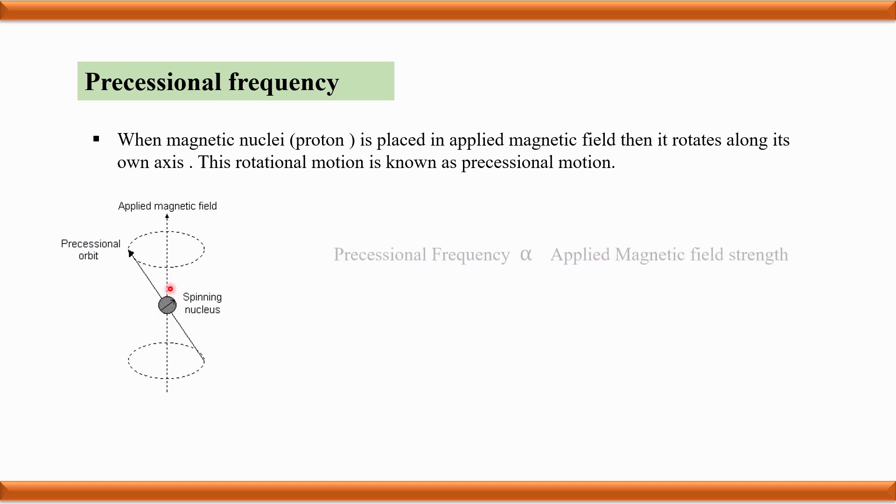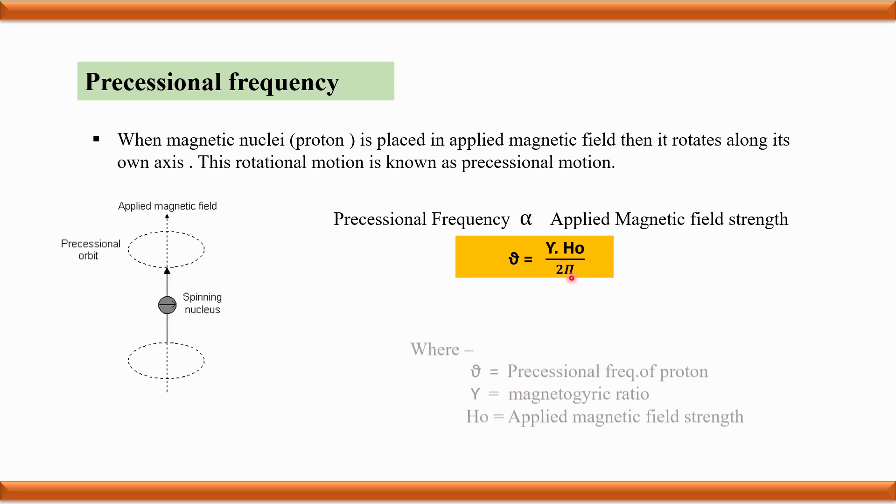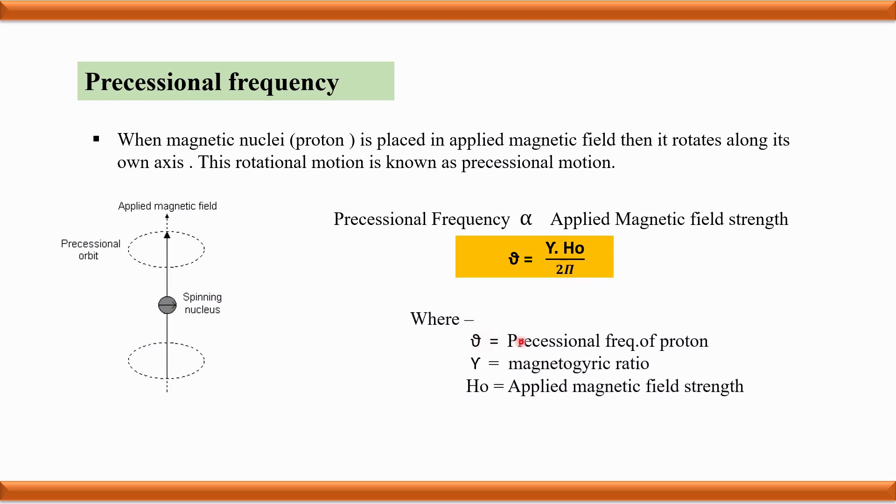The precessional frequency of the proton is directly proportional to the strength of the applied magnetic field. The formula is ν = γH₀/2π, where ν is the precessional frequency, γ is the magnetogyric ratio, and H₀ is the applied magnetic field strength.